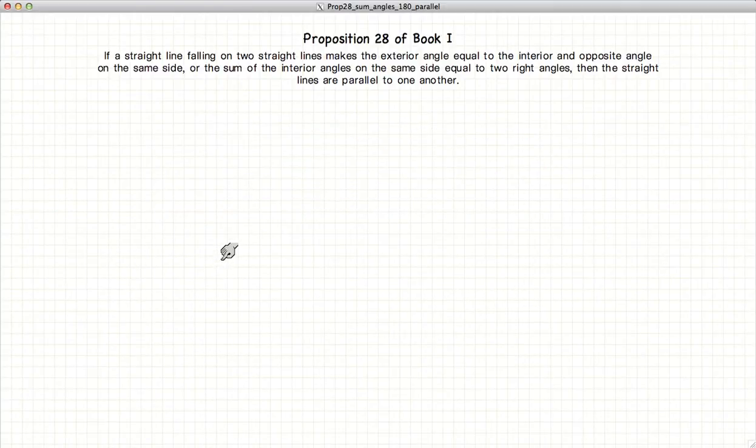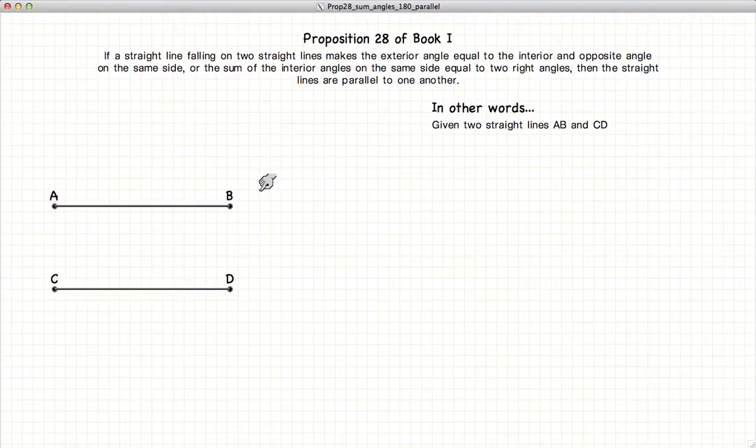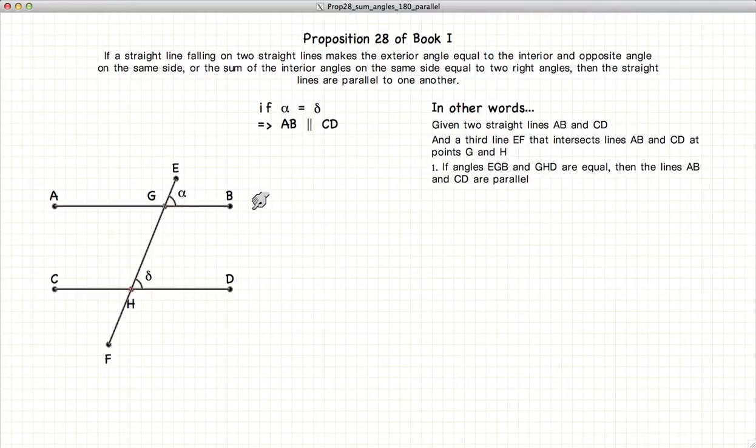So with this in mind, let's describe what this proposition states. If we have two lines, AB and CD, and a third line crossing them, then if the exterior and opposite interior angles are equal, in other words, if alpha is equal to delta, then AB and CD are parallel.